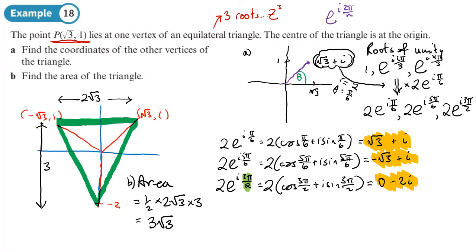The trick to doing this question was using the formula e to the i·2π over N to write the roots of unity, then multiplying each of those roots of unity by the first root that we know. That gives us all the roots of the equation that generated that root. Once we had those points, we were able to work out the area of the triangle. You should now be in a position to do exercise 1g on pages 26 to 27.